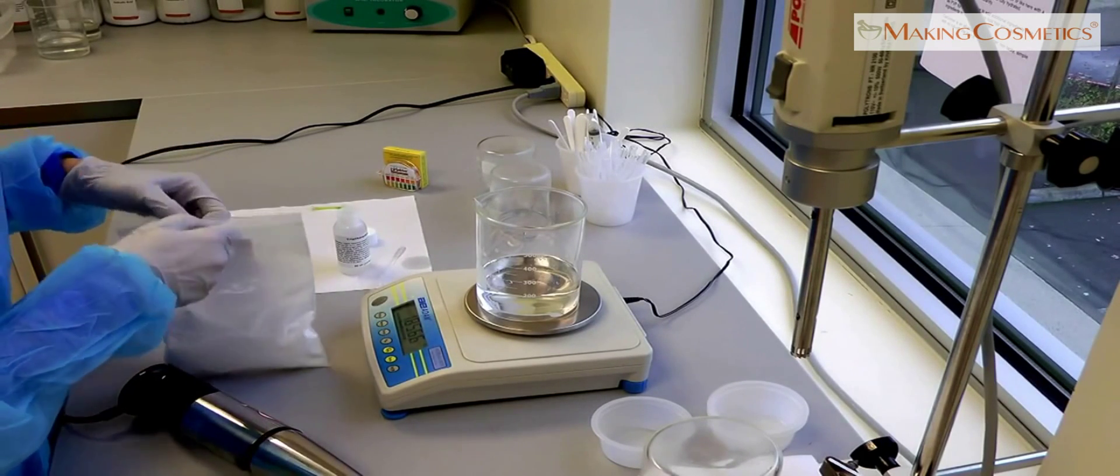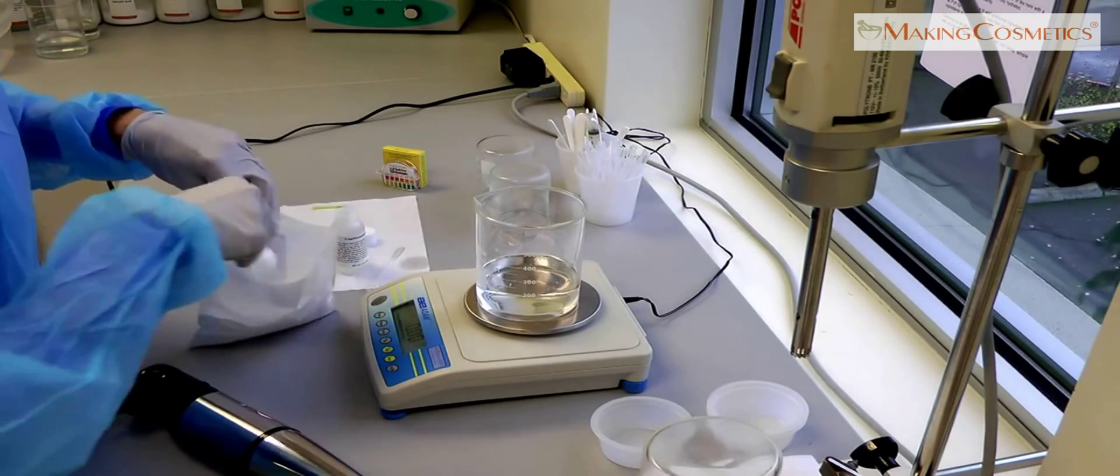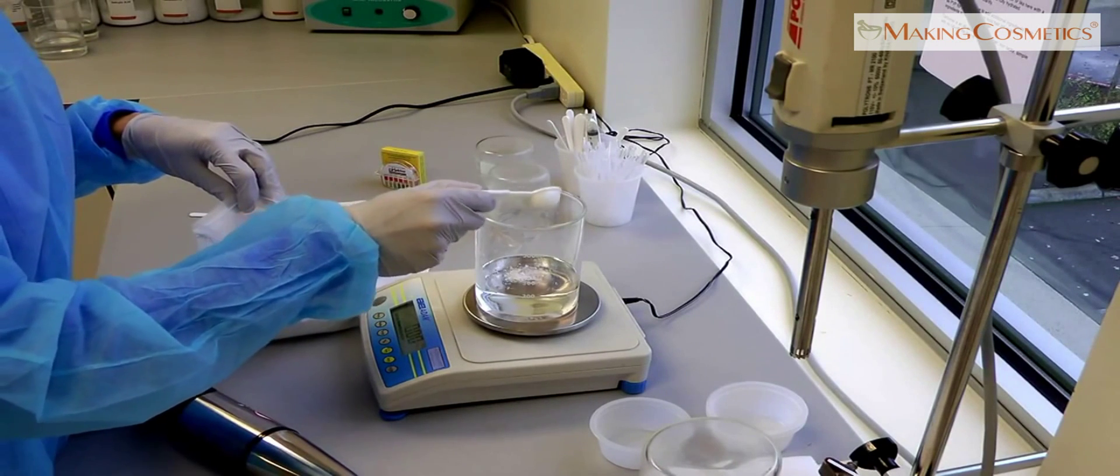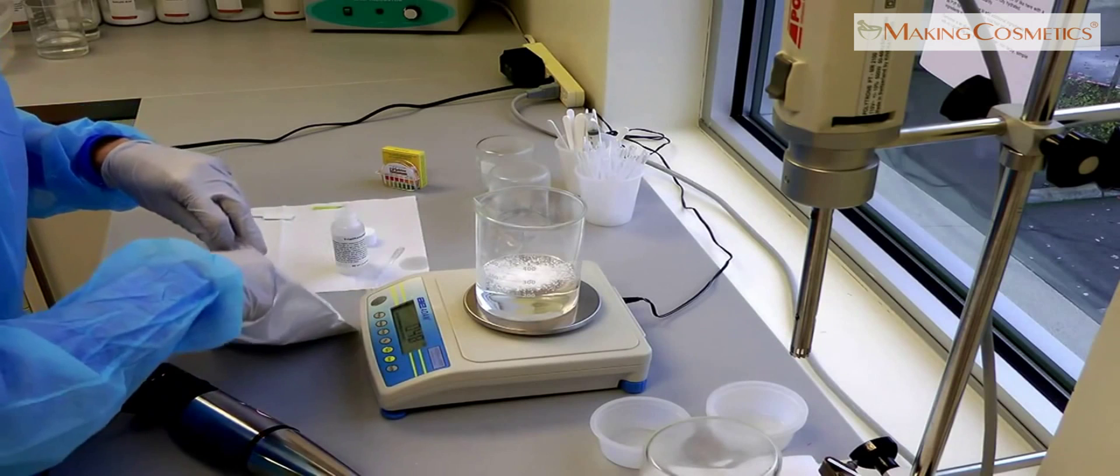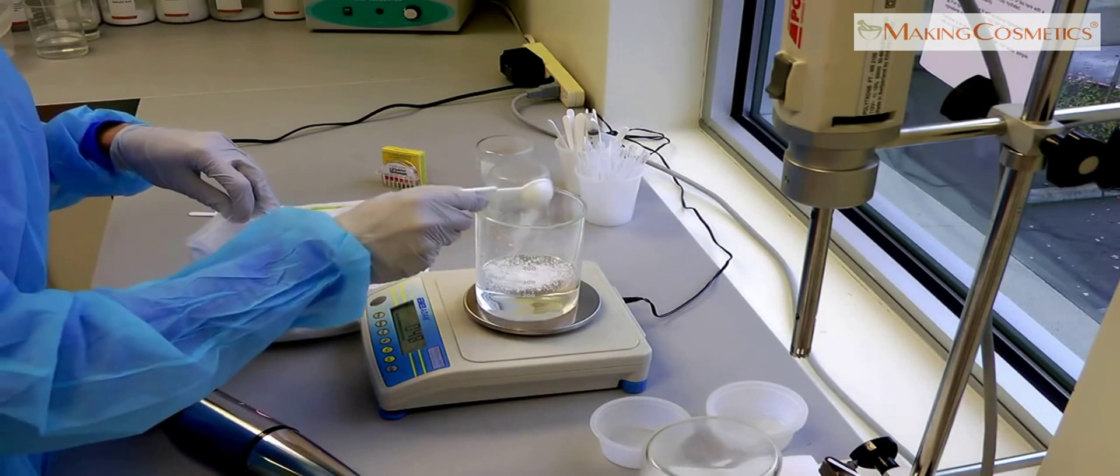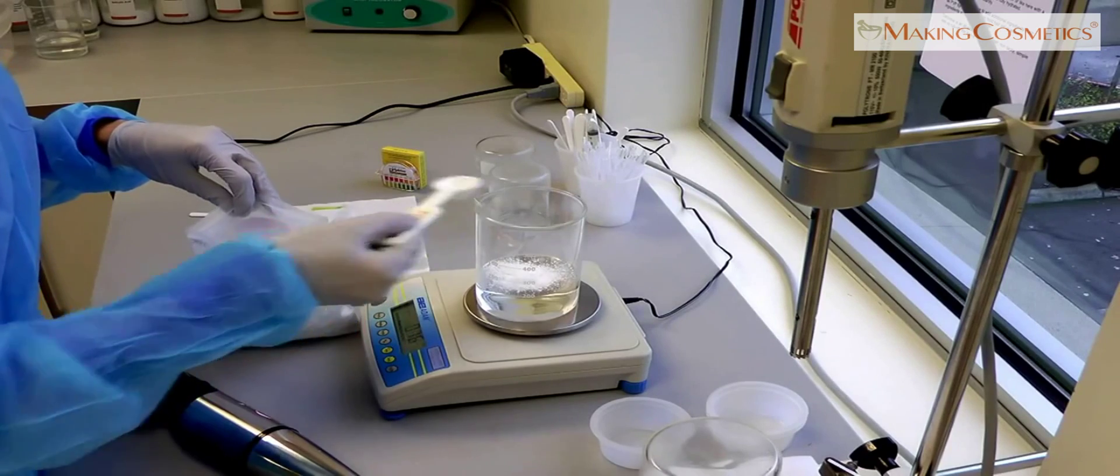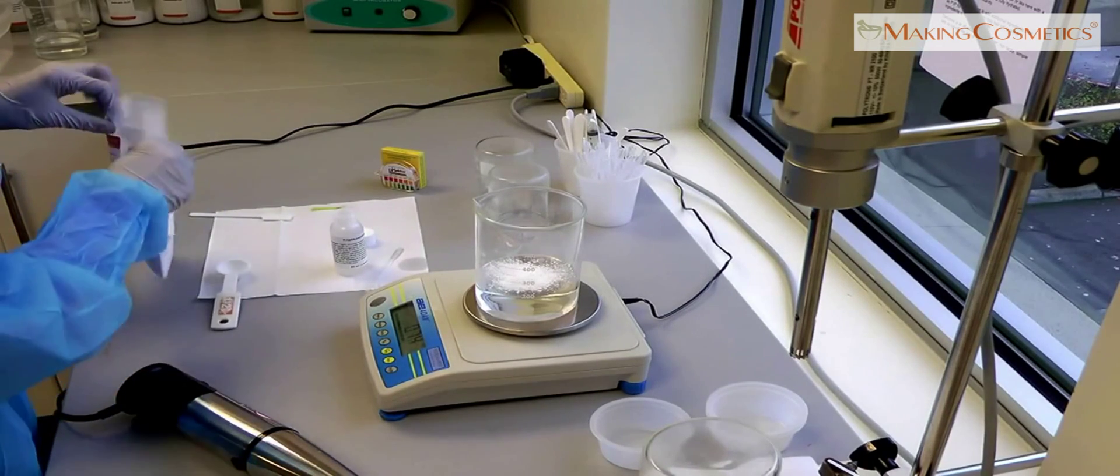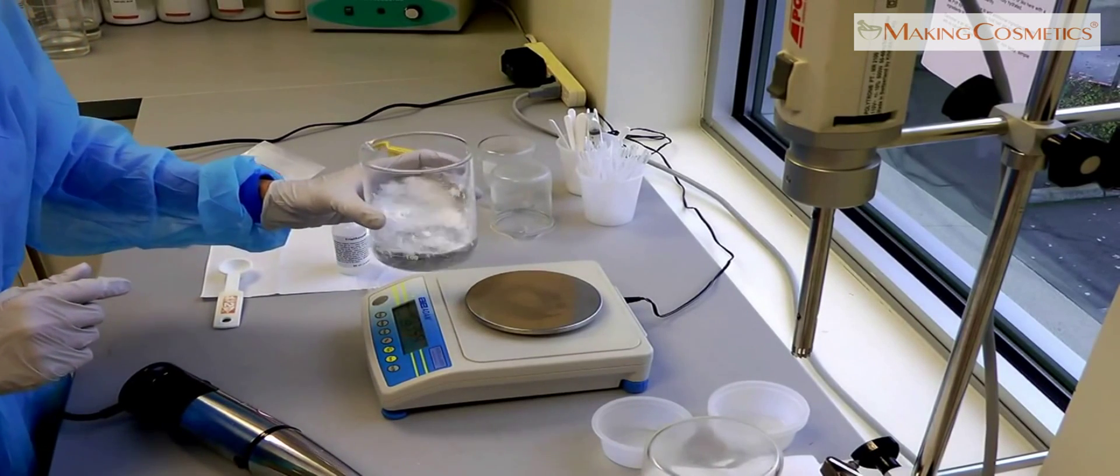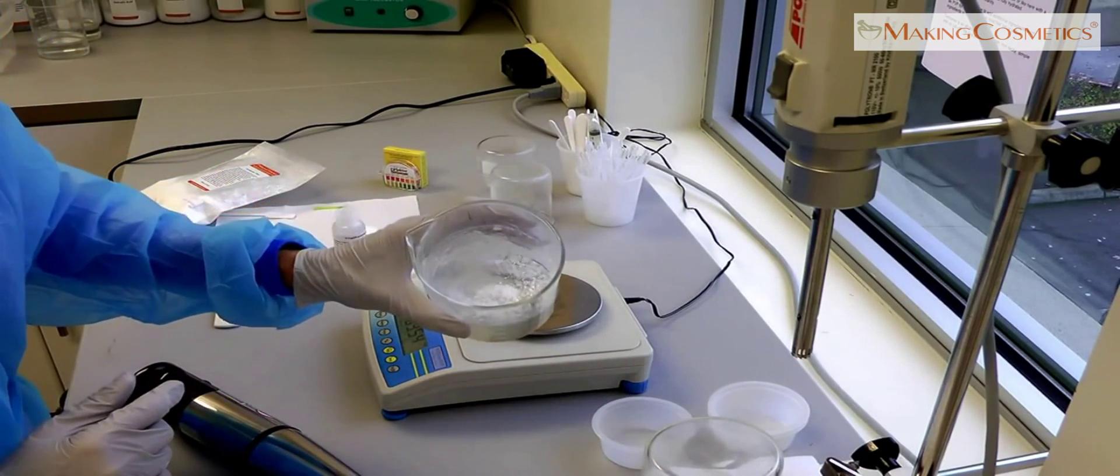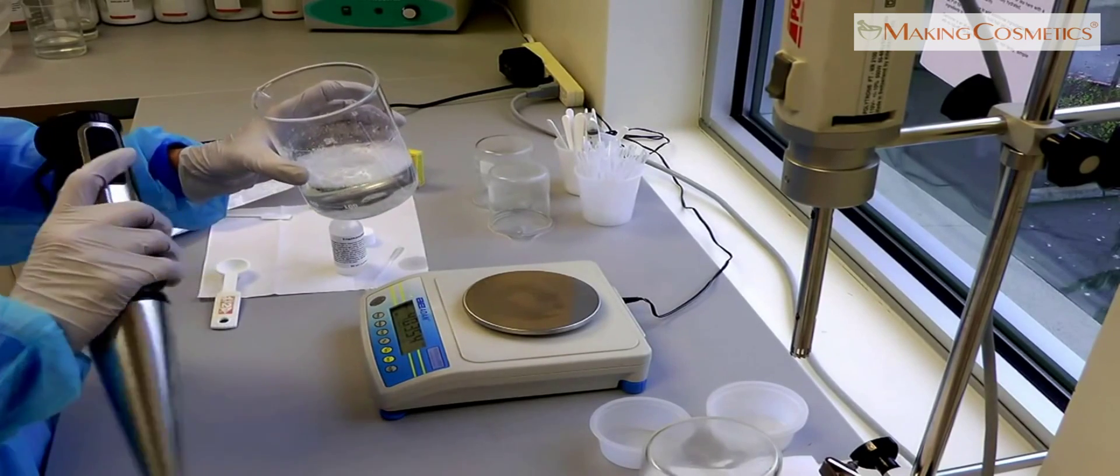We are going to add carbomer. And now we need to hydrate it. That is best done with a sheer mixer, homogenizer, or stick blender.